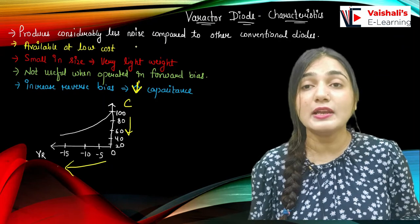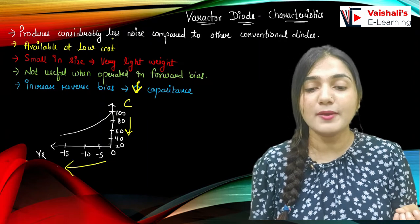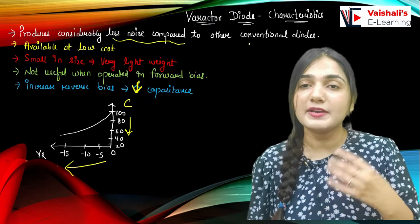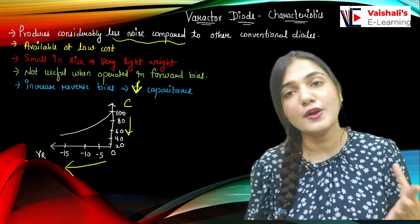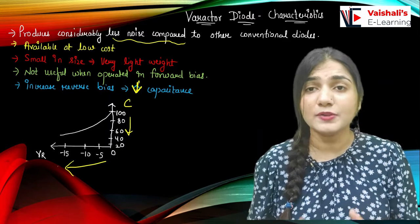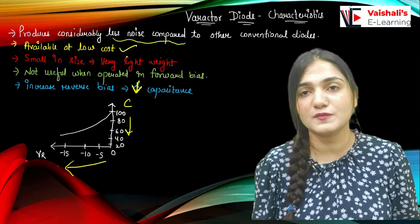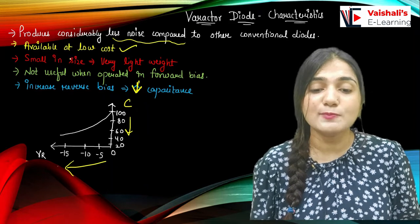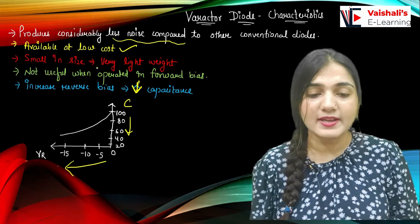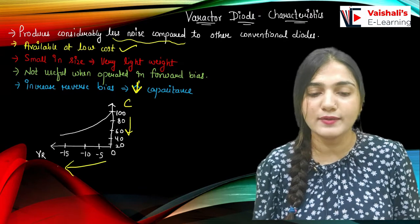The varactor diode produces very low noise compared to other conventional devices, which is a major reason for its popularity. It is also available at low cost — it is a very cheap diode. It is small in size and light in weight, so we can use it practically in applications where there are constraints of size and weight.